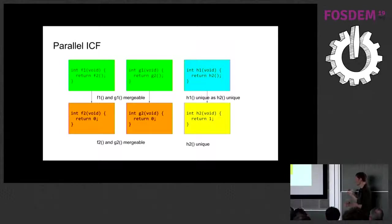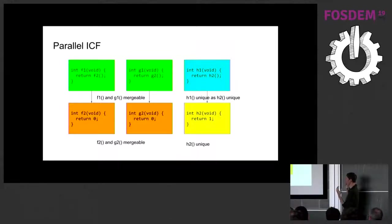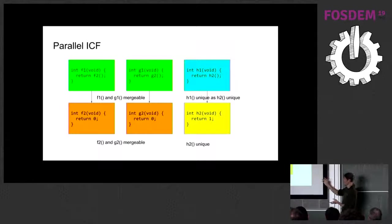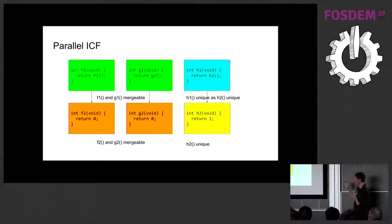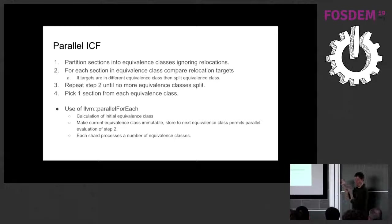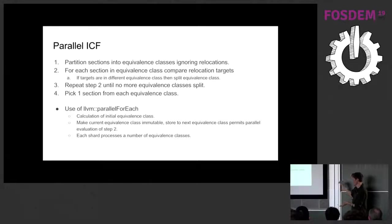Here's an example of how things might be parallelized: identical code folding. It's looking for functions that are binary identical so they can be merged into one. In this example, F1 and G1 are the same, F2 and G2 are the same, but H1 and H2 are slightly different so they can't be merged. The algorithm has to find equivalence classes amongst functions and then merge functions within those equivalence classes. There is a large comment in the LLD source code going through this in detail.